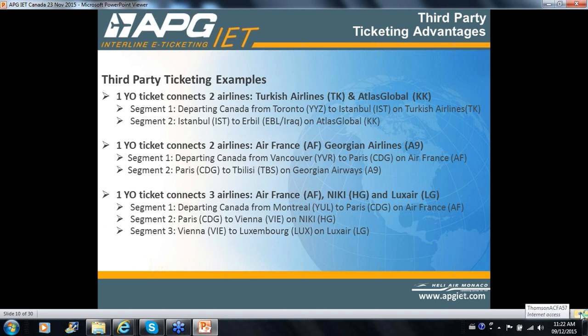Third-party ticketing examples. Let's say you have an itinerary involving two carriers, and both are signed up to the YO program. For instance, Turkish Airlines and Atlas Global, which are both Turkish carriers. Your first segment goes from Toronto to Istanbul. Then you need to connect, and your itinerary has been configured so the connecting flight will be on Atlas Global — Istanbul to Erbil in Iraq. We've seen a number of government travel on that. How would you ticket that? We'll see more details on the pricing and ticketing.